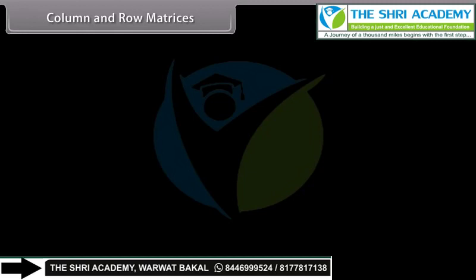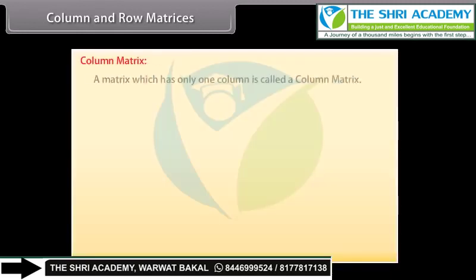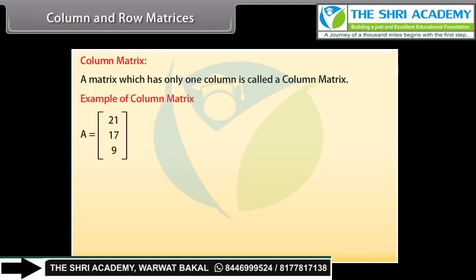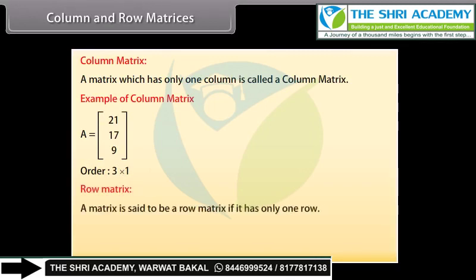Column and row matrices. A matrix which has only one column is called a column matrix. Example: column matrix A equals [21, 17, 9]. This matrix has three rows but only one column, so it is a column matrix. Its order is 3 by 1. A matrix is said to be a row matrix if it has only one row. For example, [3, 5, 1] is a row matrix as it has only one row.